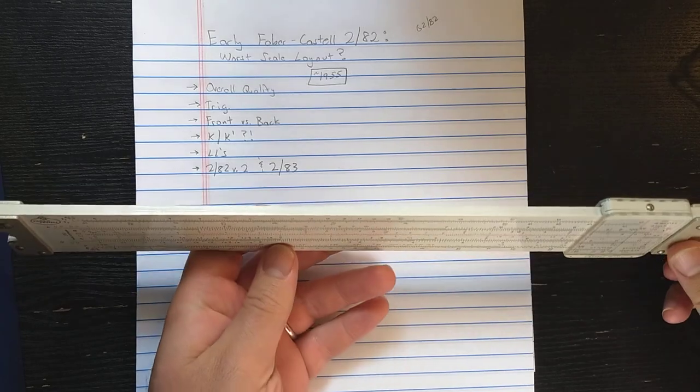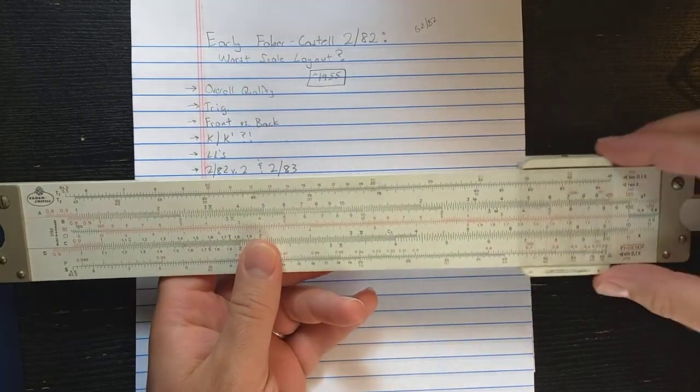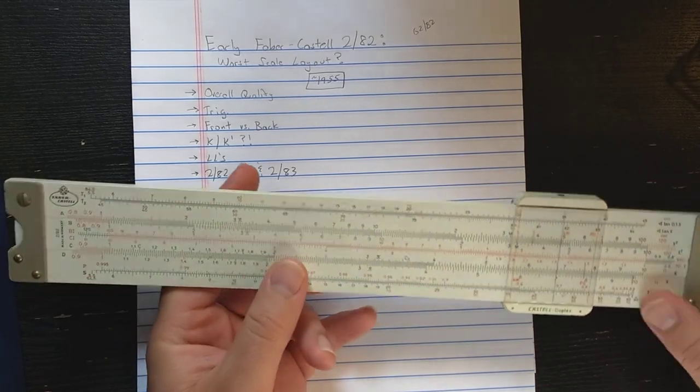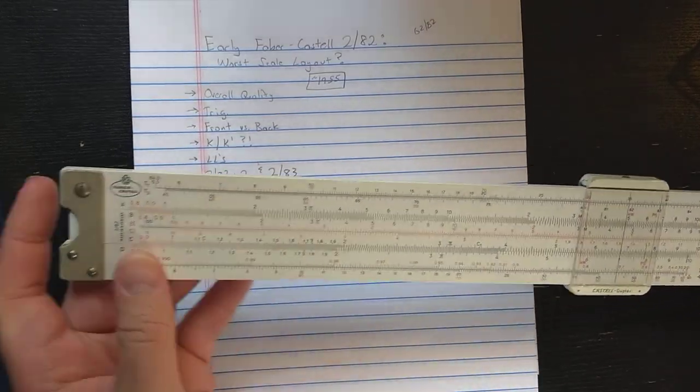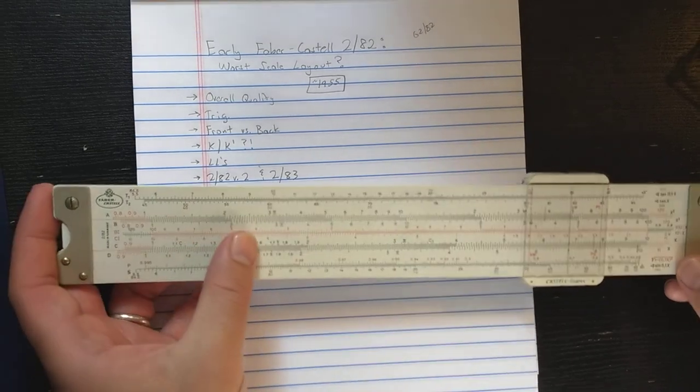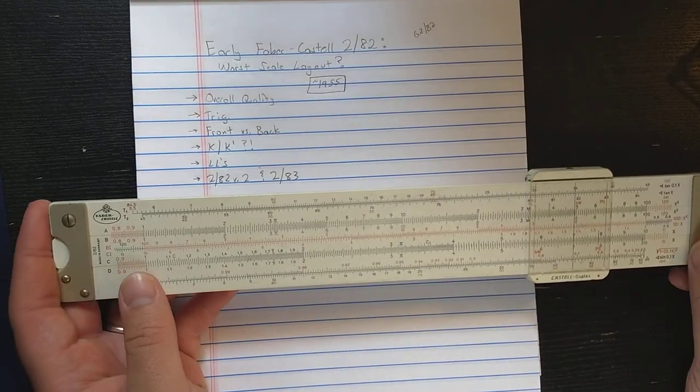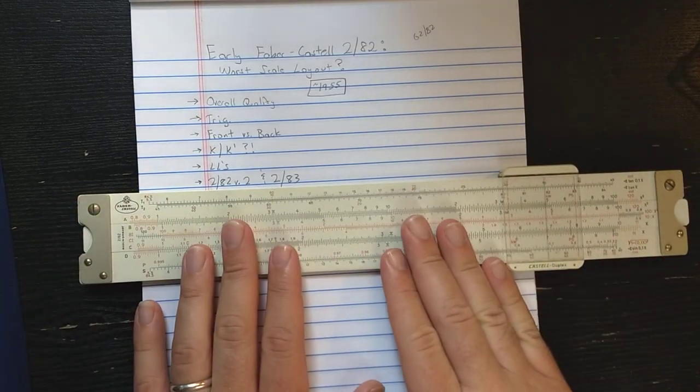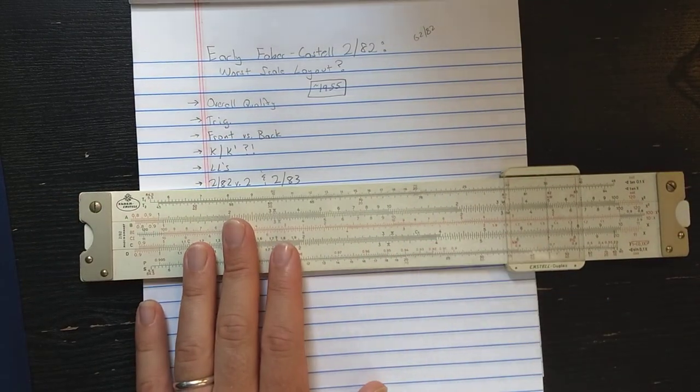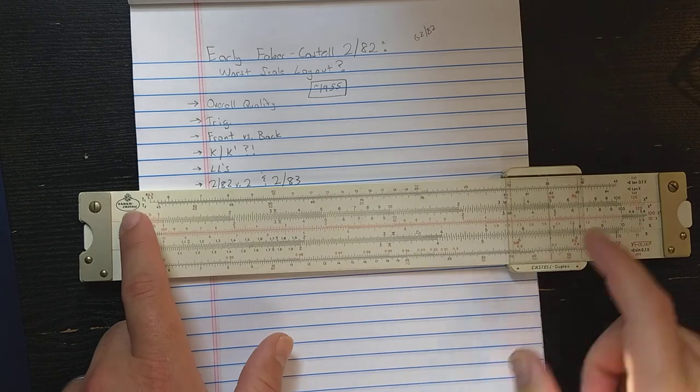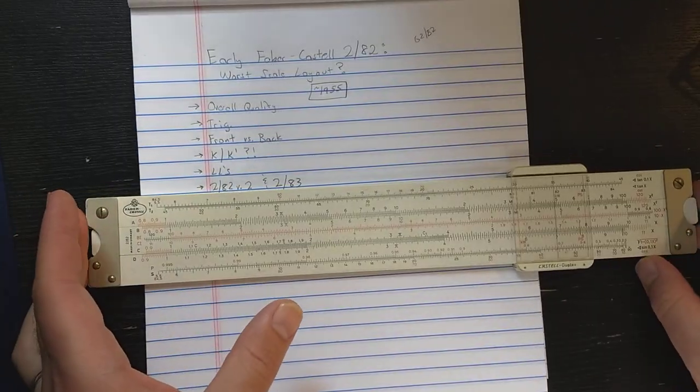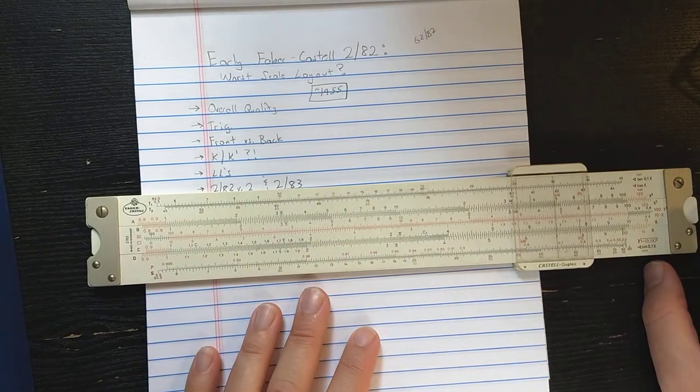It's made out of Faber-Castell's Geroplast plastic, has a plastic cursor, plastic slide and Stater's metal adjustable end braces, dual color printing, has very nice European style and Faber-Castell style touches, like the scale extensions here, multi-line cursor, has nice dual color printing, as I've said.